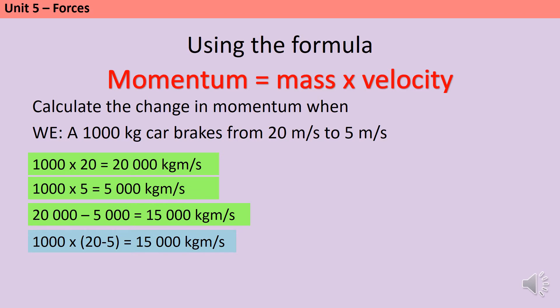So, the mass of 1,000 multiplied by 20 take 5, which is of course 15, gives us a change in momentum of 15,000 kilogram meters per second. As long as you're confident using brackets, then I've got the same answer using fewer steps.